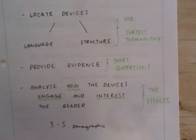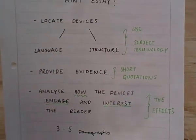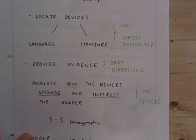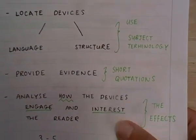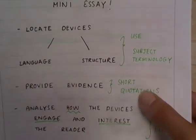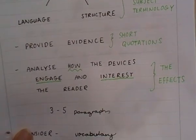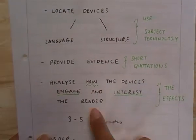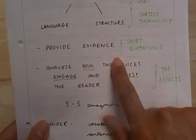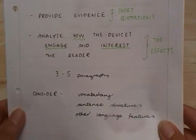If you did all language points there's no way you can get four marks. If you do all structure points there's no way you can get four marks. So we want short quotations, or quotations of the appropriate length, and then write a few paragraphs about how these things interest the reader.